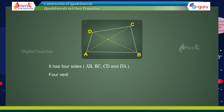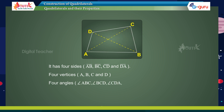Four vertices: A, B, C, and D. Four angles: angle ABC, angle BCD, angle CDA, angle DAB, and two diagonals: AC and BD.